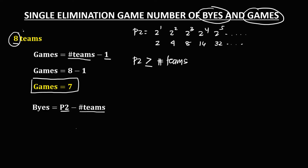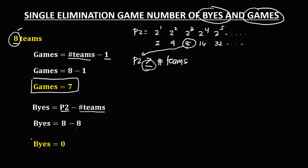Since we have 8 teams, and the power of 2 must be greater than or equal to the number of teams, we have 8 equal to the number of teams. So we're going to use 8 for the power of 2. Therefore, the number of byes is 8 minus 8, which equals 0.